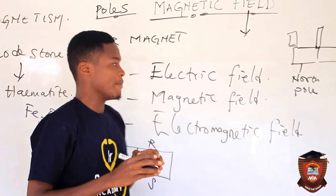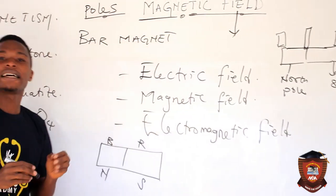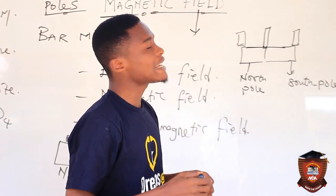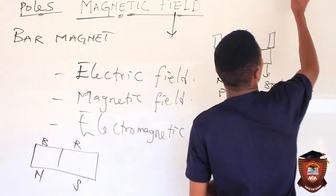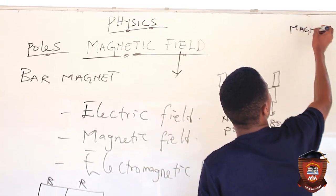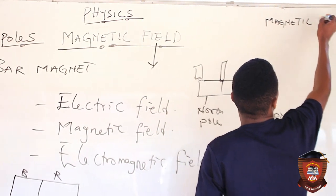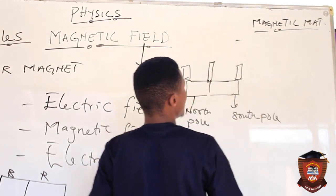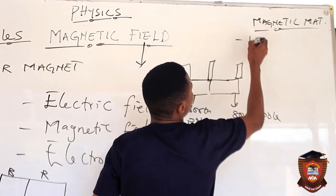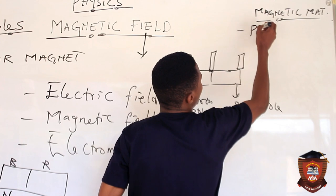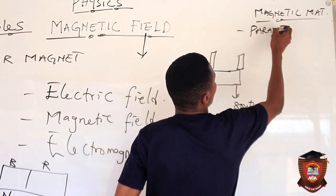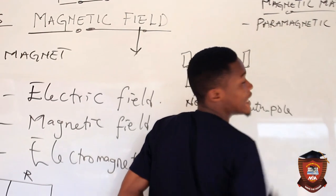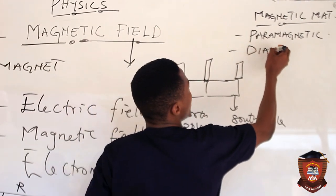Now let's also talk about magnetic materials. Magnetic materials are classified into three types: we have paramagnetic materials, we have diamagnetic materials, and we have ferromagnetic materials.